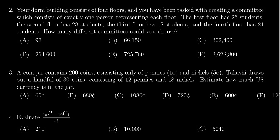In this video, we provide the solution to question number two for practice exam number four for Math 1030. We have the following situation: your dorm building consists of four floors and you've been tasked with creating a committee which consists of exactly one person representing each floor. Four floors, one person each – we need to find a committee with four people on it.